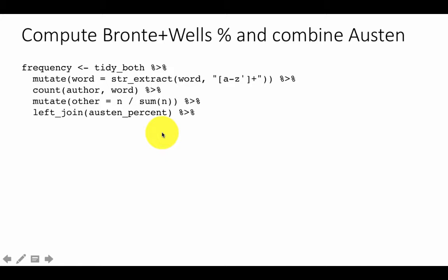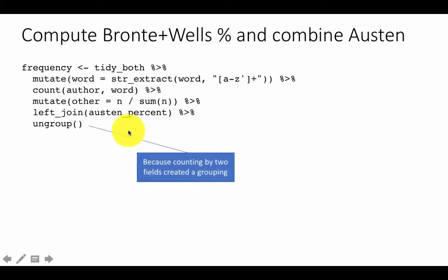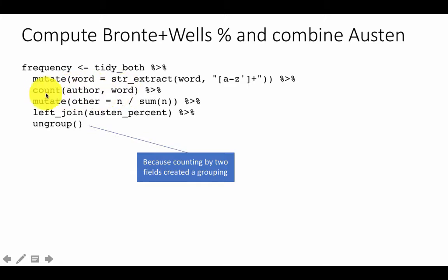The common join column is word, so the resulting table gives us for every word its percentage usage by Brontë sisters, by HG Wells, and by Austen. After that we'll be able to plot these comparisons. We also call ungroup, because counting by two fields (author and word) created a grouping that persists in the result — since we did only one summarization — so we explicitly remove it with ungroup.